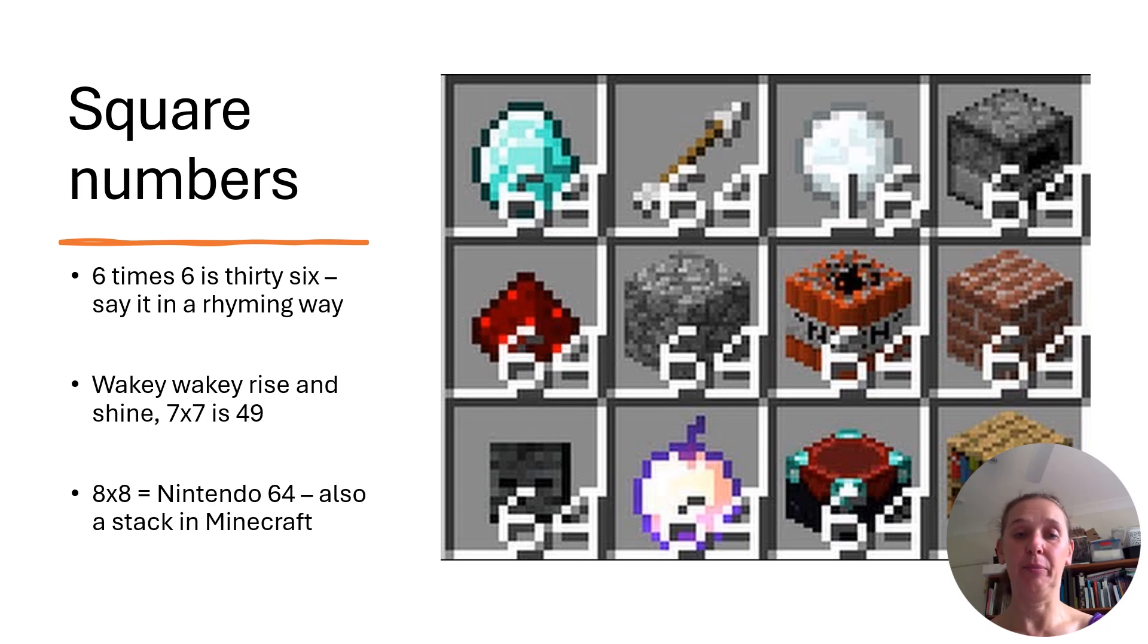Then I teach children the square numbers. So six times six is 36. So a little rhyme. Wakey, wakey, rise and shine. Seven times seven is 49. And they get these little rhymes and we just repeat them over and over. When I first started teaching, we did eight times eight was Nintendo 64. But 64 is an important number in maths and in computing. So it actually has popped up, I discovered, in Minecraft. So a Minecraft stack is 64. So that's another way to get that one locked in.